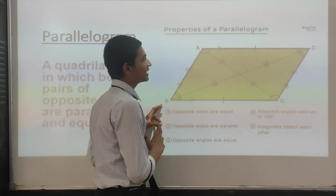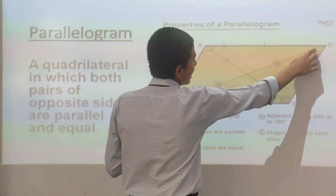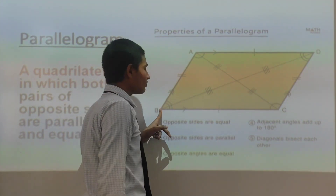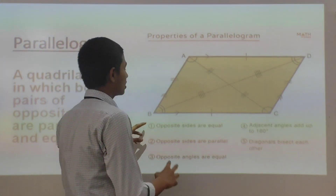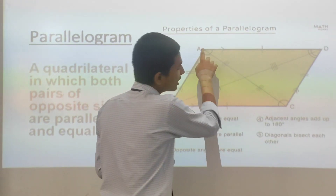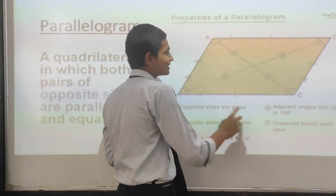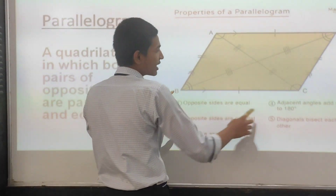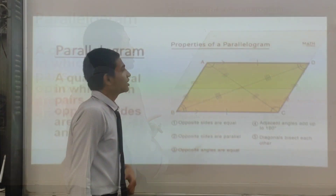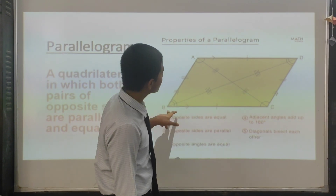In a parallelogram, the opposite sides are equal and parallel. Side BC is equal to side AD and they are parallel to each other. AB is parallel to DC and equal. In parallelograms, the opposite angles are also equal — angle B equals angle D, and angle A equals angle C. The sum of adjacent angles is 180 degrees — sum of angle A and angle B is 180 degrees, and angle A and angle D is also 180 degrees. The diagonals of the parallelogram bisect each other.